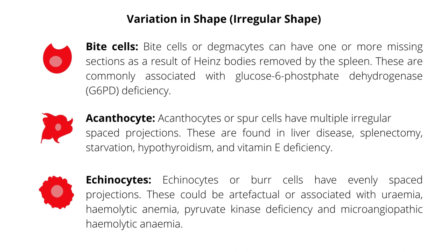Acanthocytes or spur cells have multiple irregularly spaced projections. These are found in liver disease, splenectomy, starvation, hypothyroidism, and vitamin E deficiency. Echinocytes or burr cells have evenly spaced projections. These could be artifactual or associated with uremia, hemolytic anemia, pyruvate kinase deficiency, and microangiopathic hemolytic anemia.